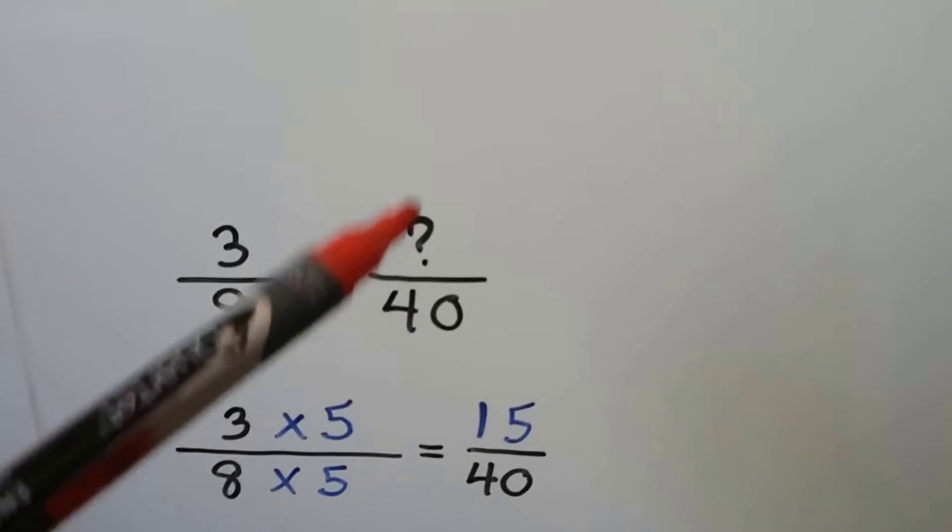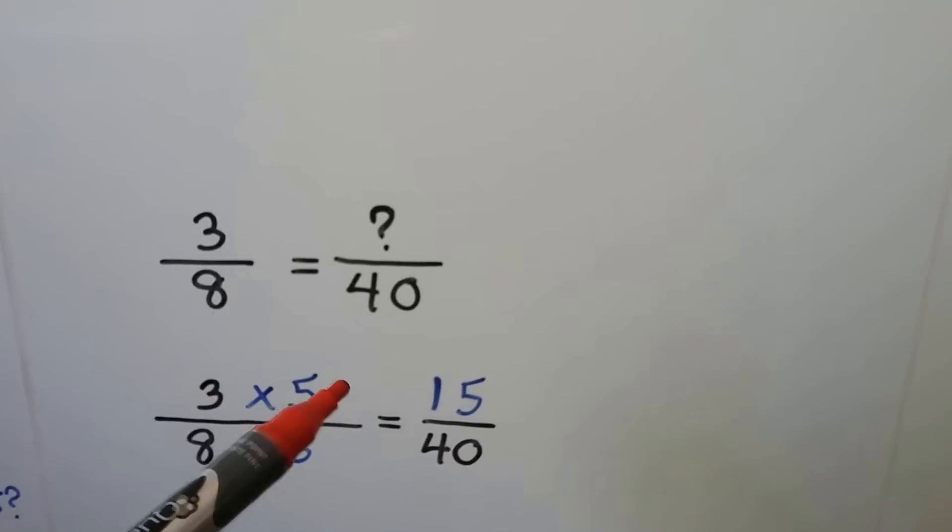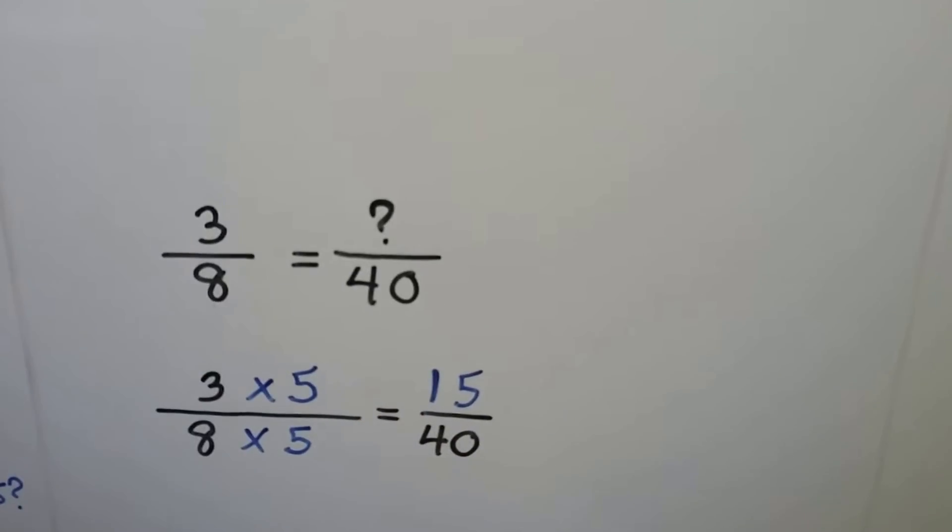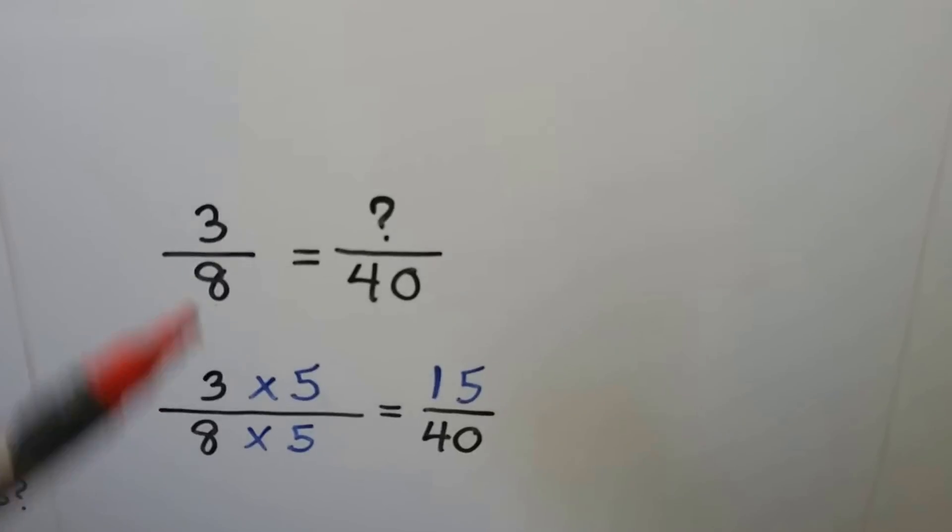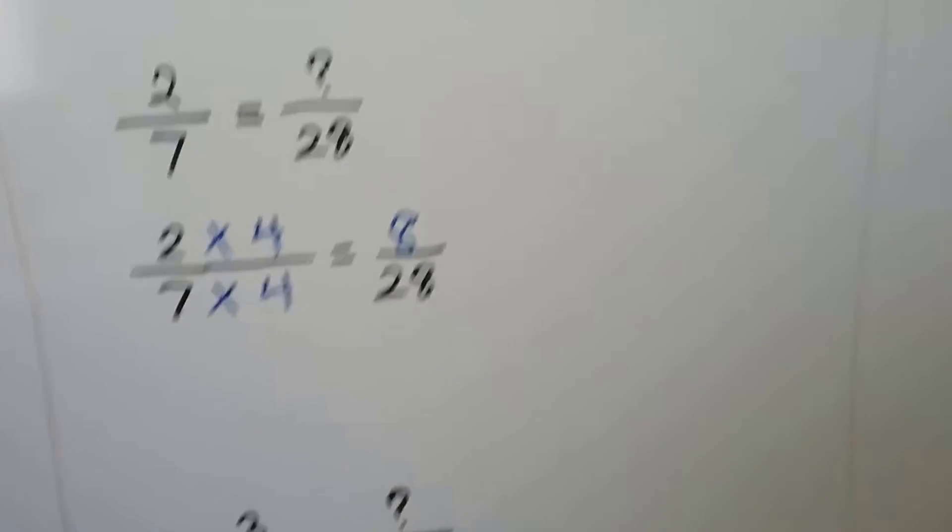We have 3/8 is equal to something fortieths. 8 times 5 is 40, so we multiply the 3 times 5 and get 15 and make an equivalent fraction.